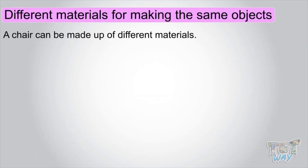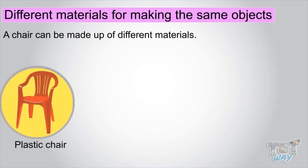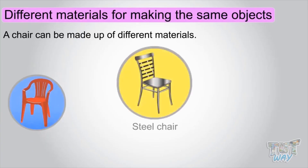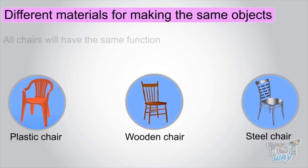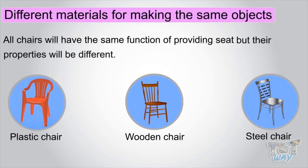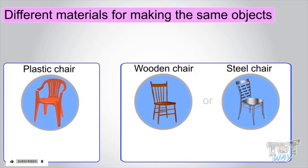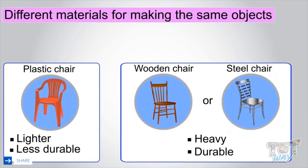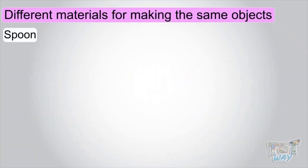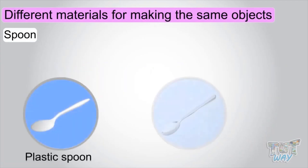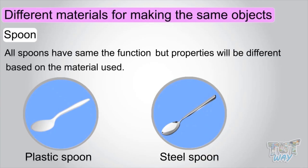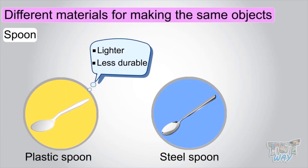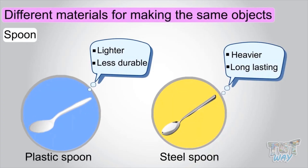We can use different materials to make different objects. Like a chair can be made of plastic, steel, or wood. All chairs have the same function of providing a seat, but their properties will be different. The plastic chair will be lighter than the steel and wooden one, and less durable. Similarly, spoons can be made of plastic or steel. The plastic spoon will be lighter, but the steel spoon will be longer lasting.